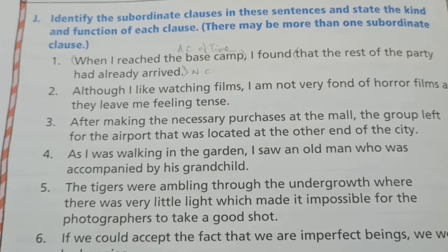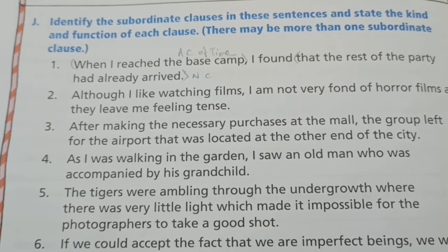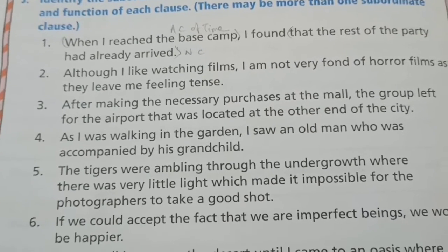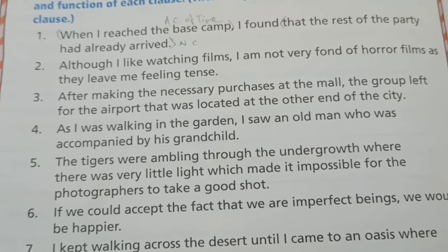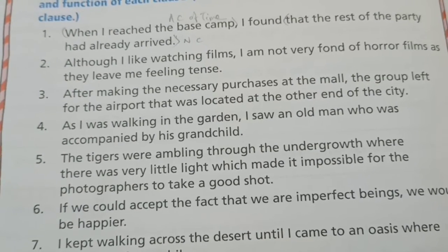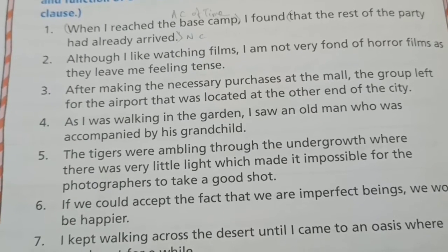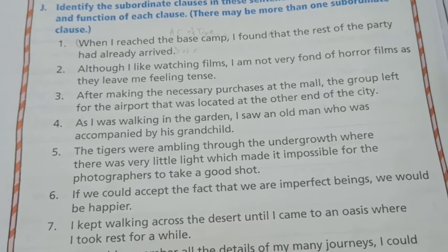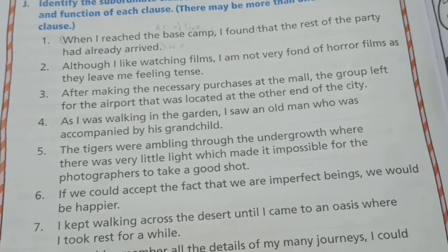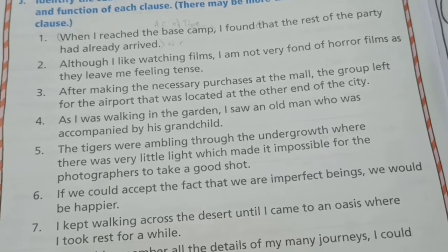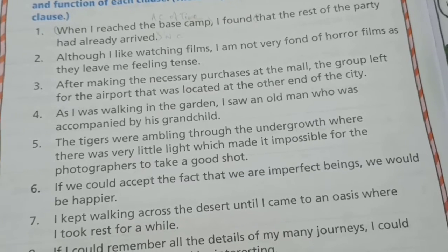Exercise J: Identify the subordinate clauses, state their kind and function. First sentence has two clauses: 'when I reached the base camp' is an adverb clause of time modifying 'found'; and 'that the rest of the party had already arrived' is a noun clause which is the object of 'found'. Second: 'although I like watching films' is an adverb clause of concession modifying 'am not fond'; 'as they leave me feeling tense' is an adverb clause of reason also modifying 'am not fond'.